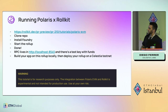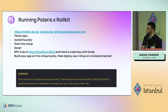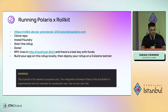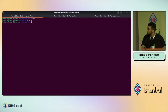The documentation PR is already merged to main, so if you go to rollkit.dev you'll find docs on what Polaris is and how to use it. Essentially it's very simple: clone the repo, install Foundry, start the rollup, and you're done. Let me show an example — I already have the dependencies installed.